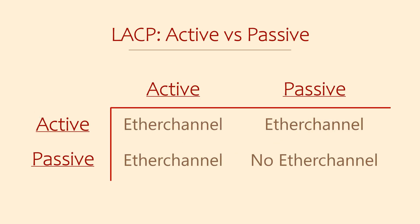LACP itself can be either in active or passive mode. An interface in active mode will actively start sending LACP messages when the interface comes online. An interface in passive mode will only send LACP messages if another device starts sending them first. So at least one of the two switches needs to be in active mode for an EtherChannel to form dynamically. Note that a manual EtherChannel does not send or receive LACP messages at all.